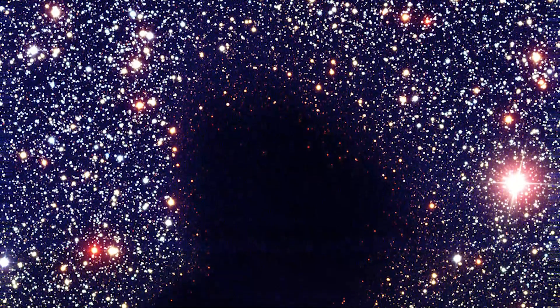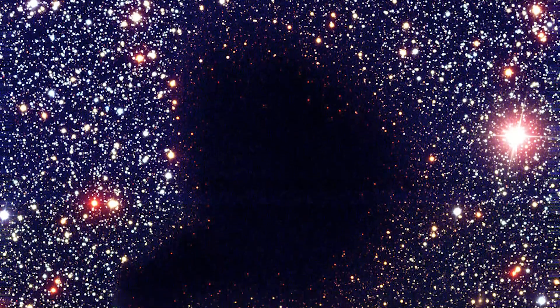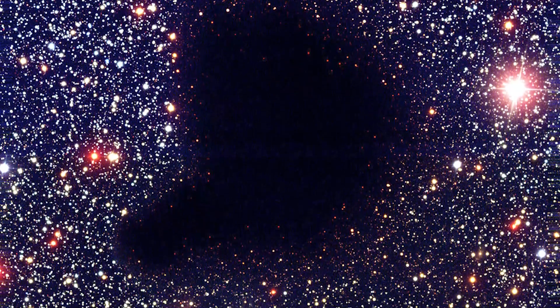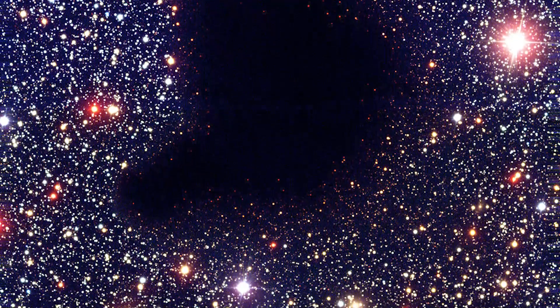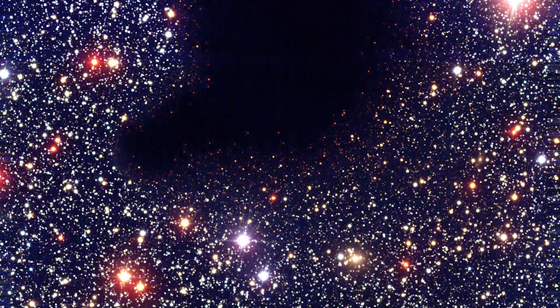Images of Bernard 68, a black nebula that does not allow light to penetrate it, has been compared to the Boötes void. Because the nebula is significantly closer and there are a few stars in front of it, the photos of Bernard 68 are much darker than those of the void.